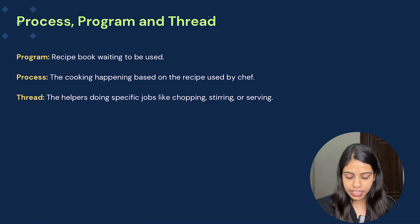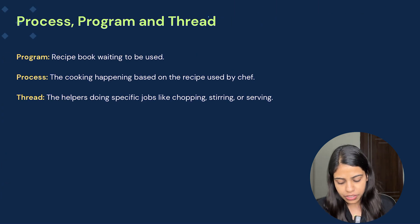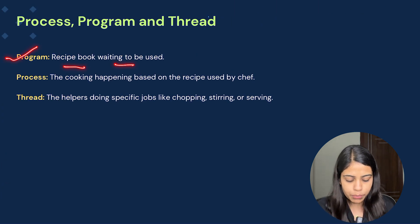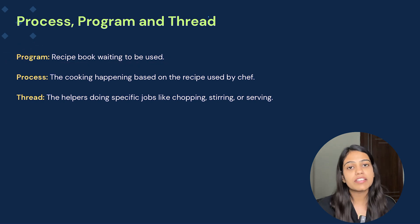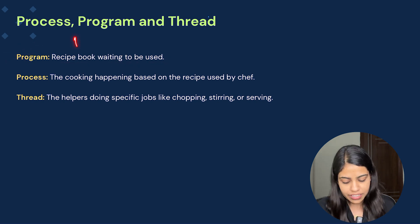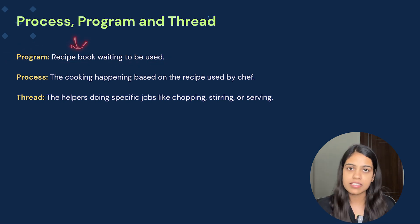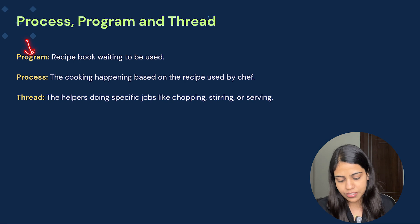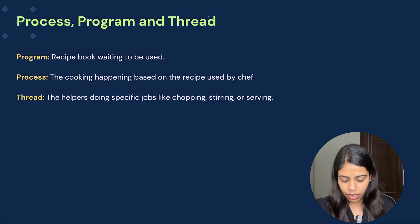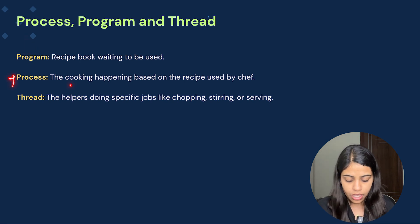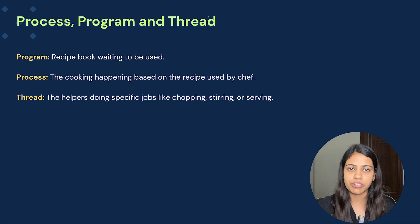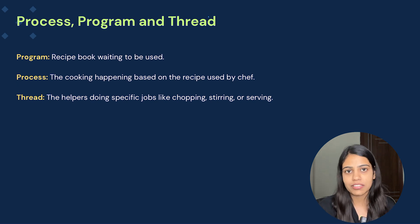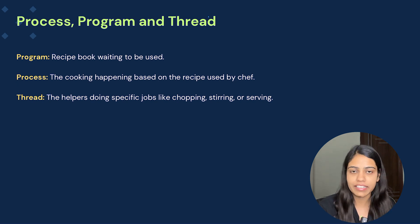Let's take one more example. A program is basically like a recipe book which is waiting to be used. Consider if I have to prepare pasta — the recipe book is a set of instructions, so we can say that is the program. Now the cooking happening based on the recipe used by the chef — that is basically the process.